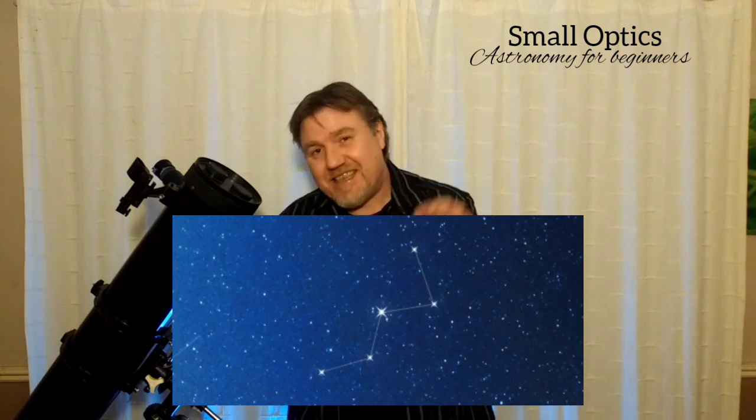It's a really distinctive, bright constellation. Cassiopeia is a distinctive W or an upside-down capital M, however you want to look at it. The first target — you're outside, you're looking at Cassiopeia.